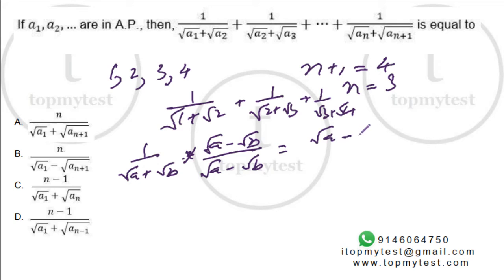You'll get root A minus root B divided by root A square minus root B square, which is A minus B. This is what you'll get for each of the terms.